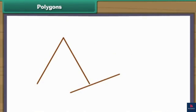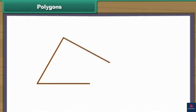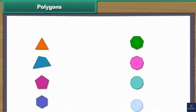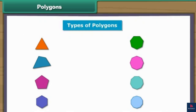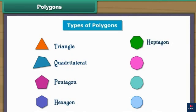We can form different shapes by enclosing them with line segments on all sides. Such closed figures are known as polygons. Polygons have different names depending upon the number of line segments they use. The types of polygons are: triangle, quadrilateral, pentagon, hexagon, heptagon, octagon, nonagon and decagon. Now we will learn about each polygon one by one in detail.